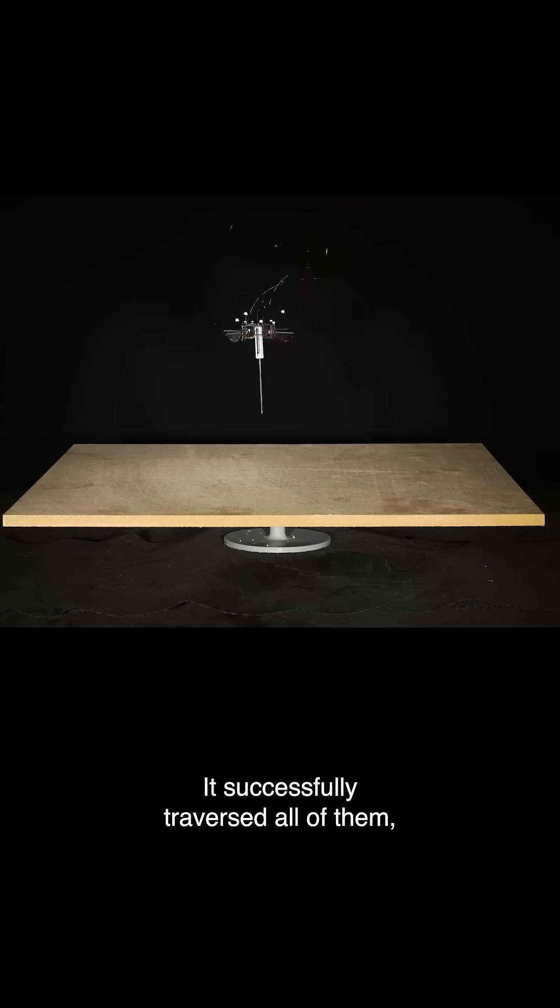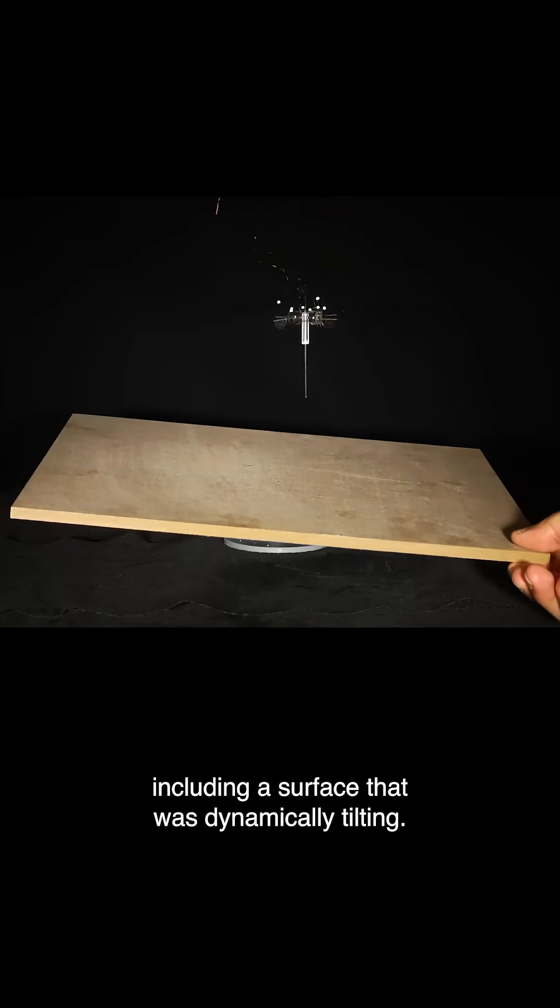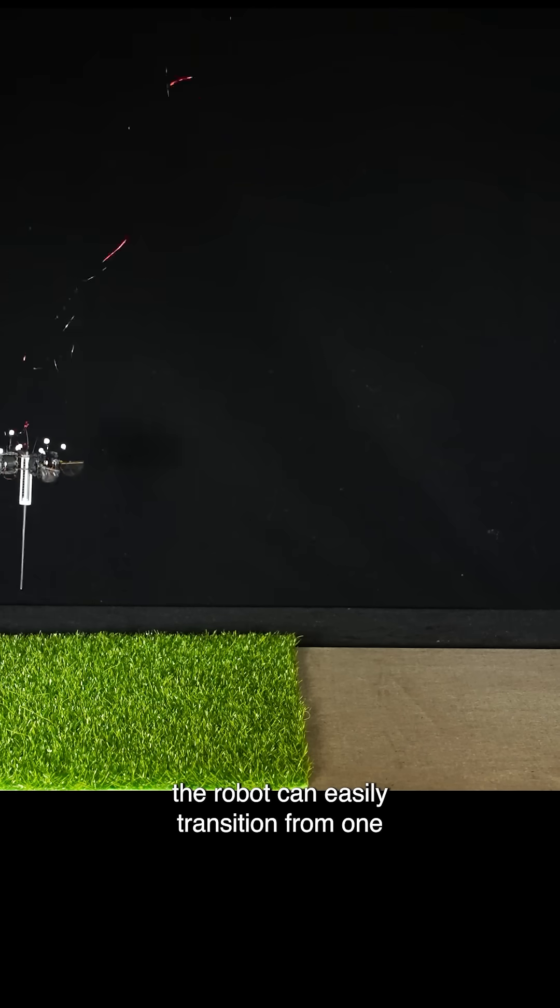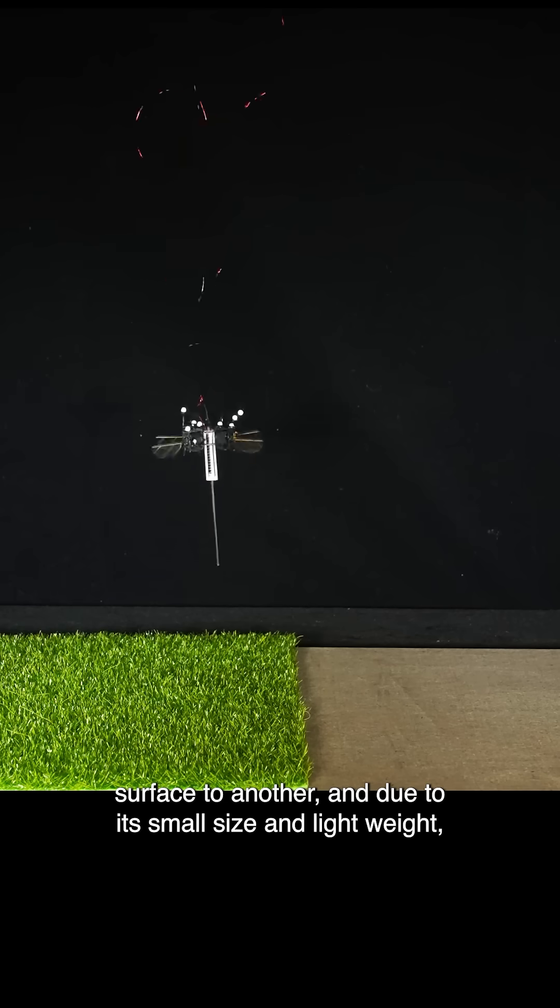The researchers tested the hopping robot and its control mechanism on a variety of surfaces. It successfully traversed all of them, including a surface that was dynamically tilted. Since the controller can handle multiple terrains, the robot can easily transition from one surface to another.